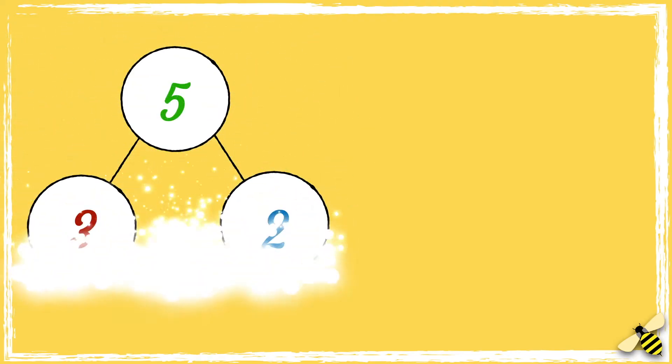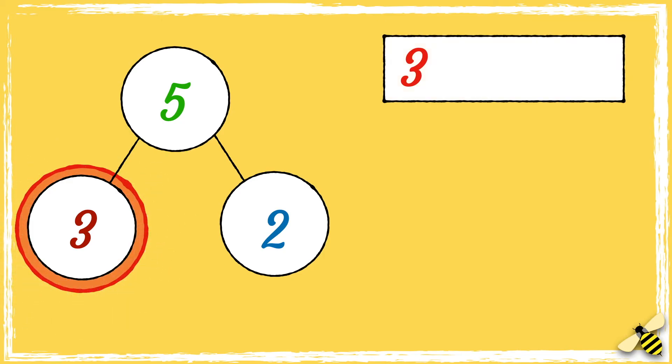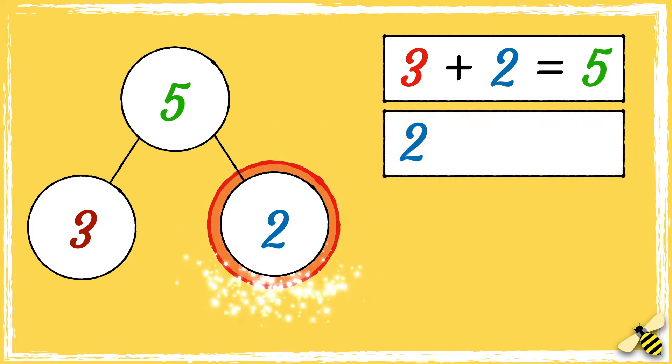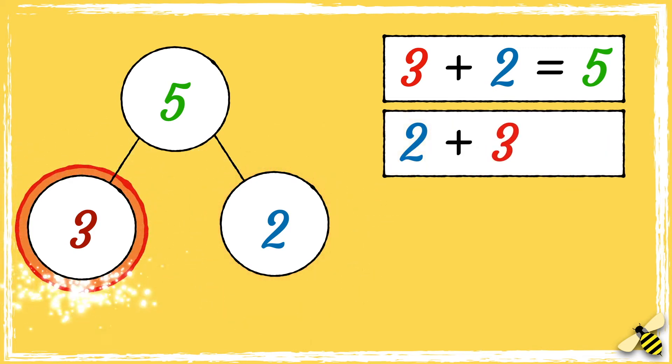Here is a part-whole model. It shows that 3 add 2 equals 5. We could also say that 2 add 3 equals 5.